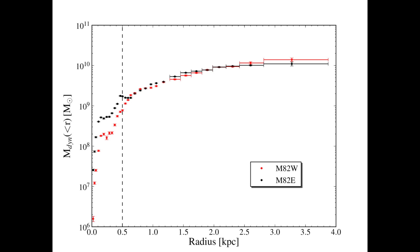Figure 5 of our paper shows the mass profile based on our stellar kinematic measurements. We assume circular motion to calculate the enclosed mass at each point. While non-circular motions are expected in the central region, and in particular the bar region, circular motion is a good assumption at large scales. We estimate M82's total dynamical mass is approximately 10 to the 10 solar masses. The superwind is likely launched from the region inside the dashed line, where we estimate the mass is less than 2 times 10 to the 9 solar masses.